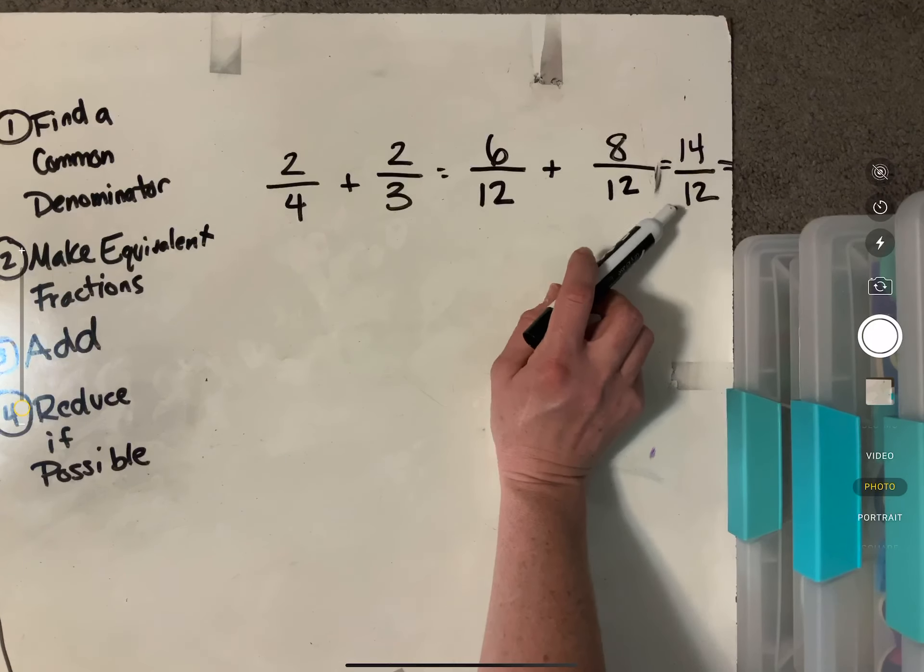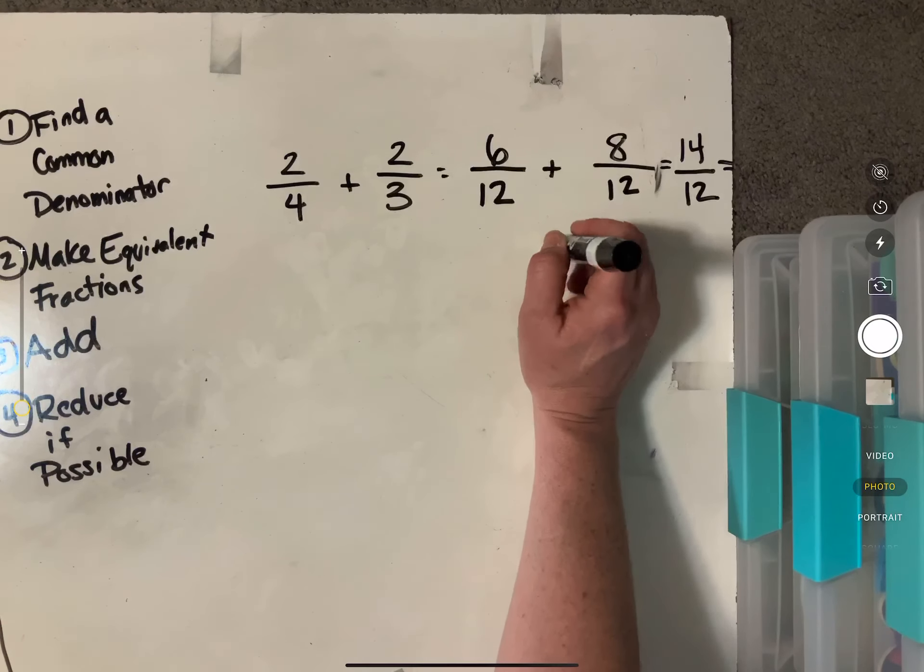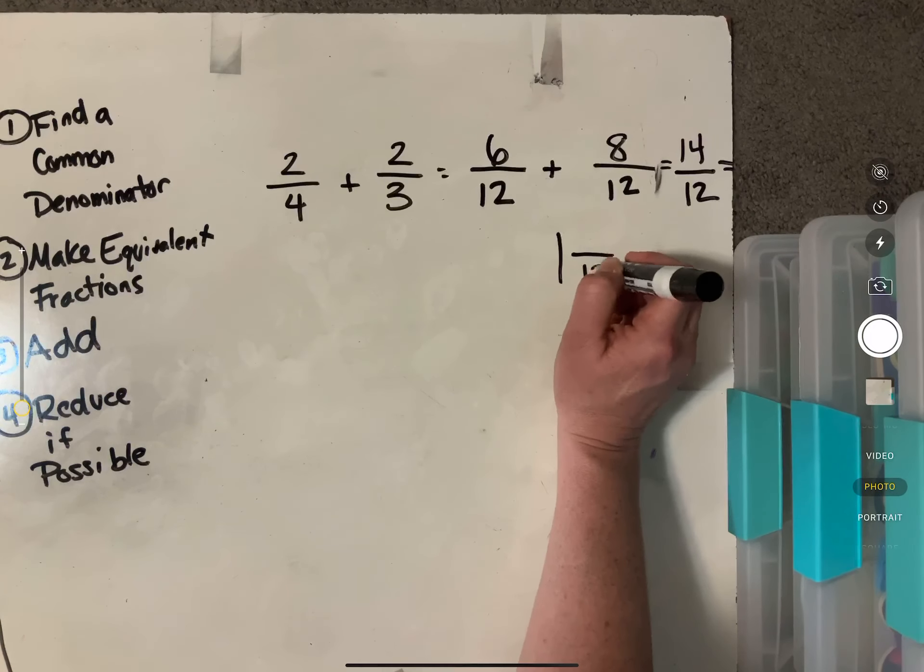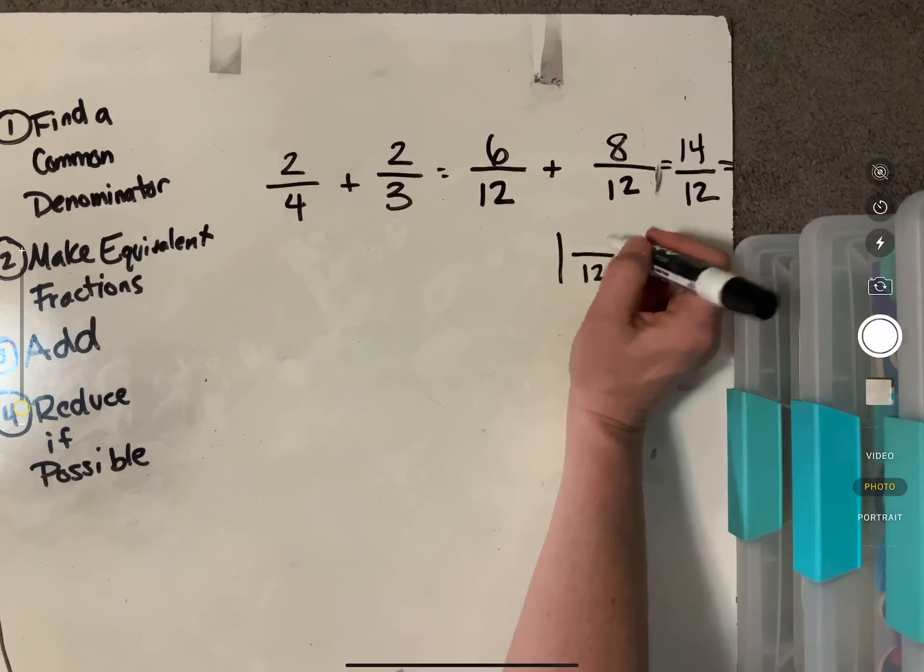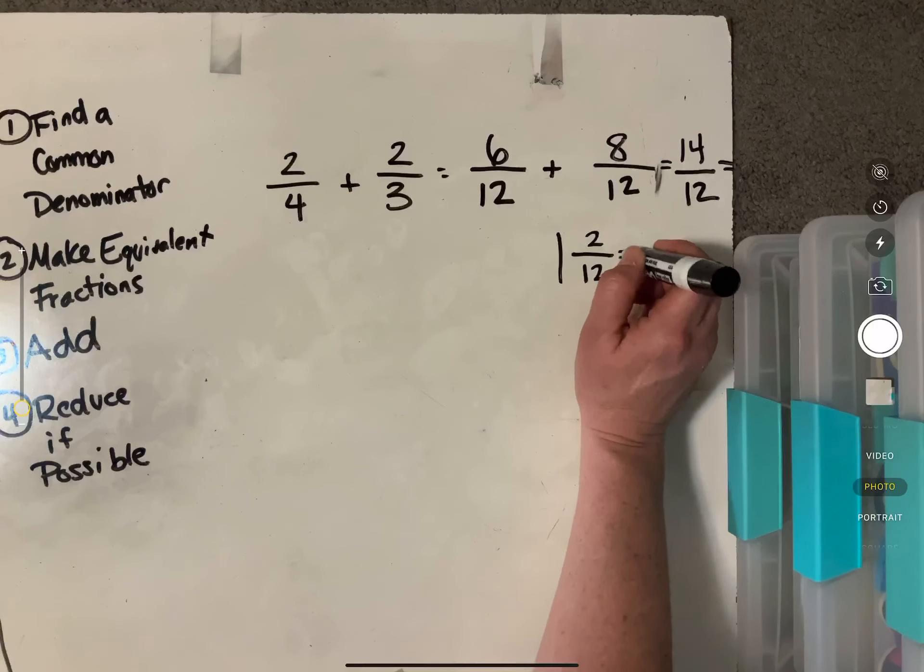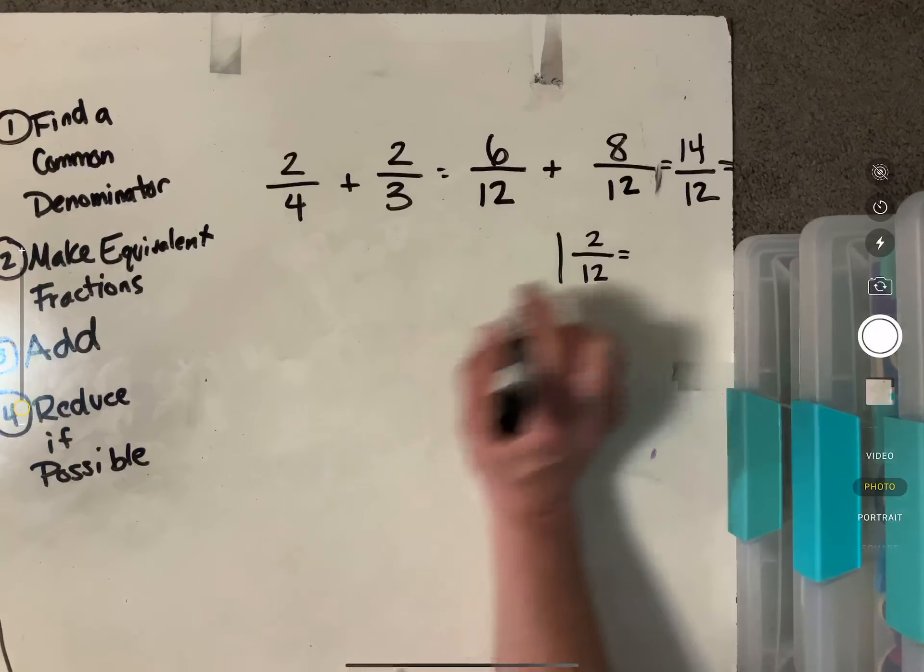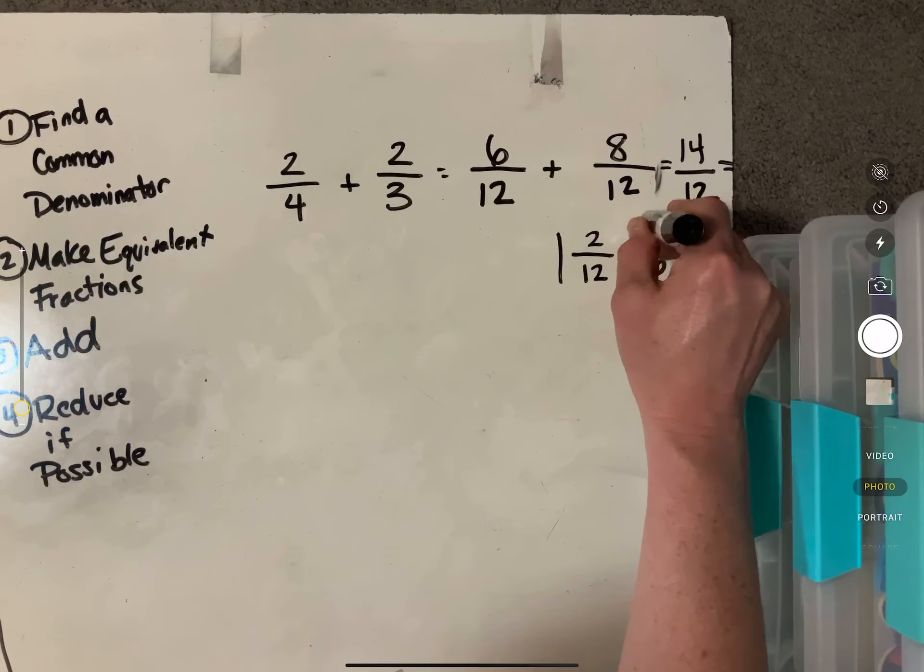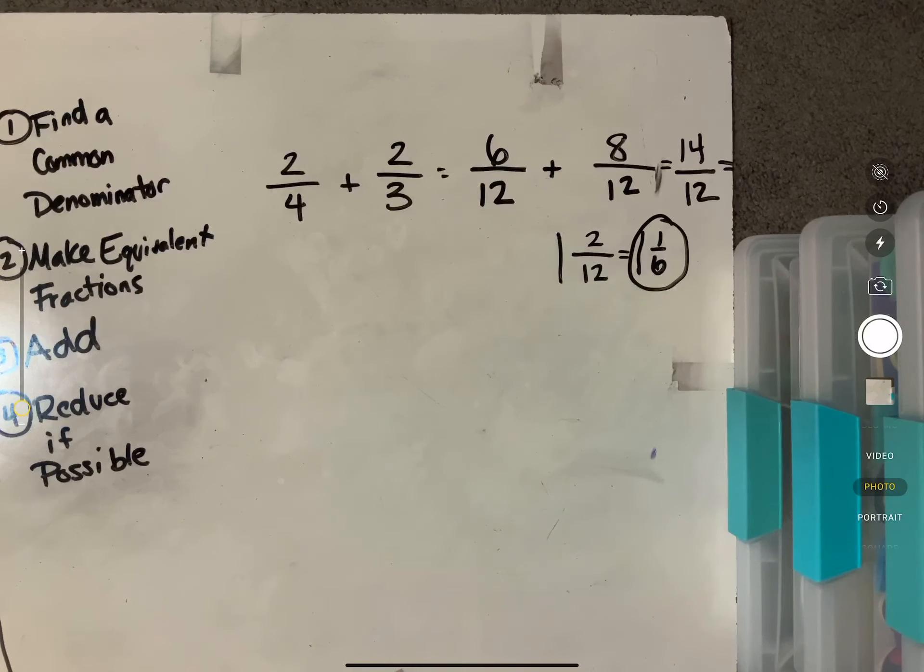So if we think about how we turn things into a mixed number, so 12 goes into 14, one whole time with how many leftover. And remember our denominator stays the same. So two leftovers. So one and two twelfths. And then if we reduce that even further, we can do one and one sixth. So our final answer here is one and one sixth.